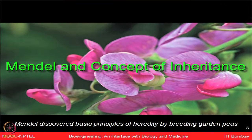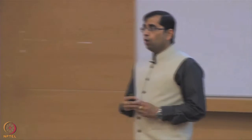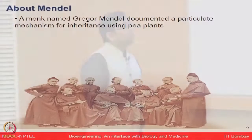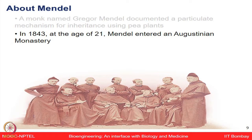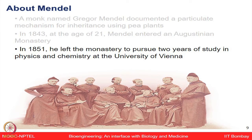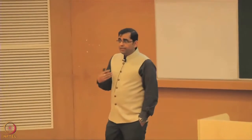Now let's talk about Mendel and his inheritance experiments. Mendel was doing these experiments not for a job or profession, but out of personal interest. He was actually a monk who grew pea plants in his own backyard. At age 21, he joined the Augustinian monastery, but he was much more interested in studying physics, chemistry, and math — not biology.